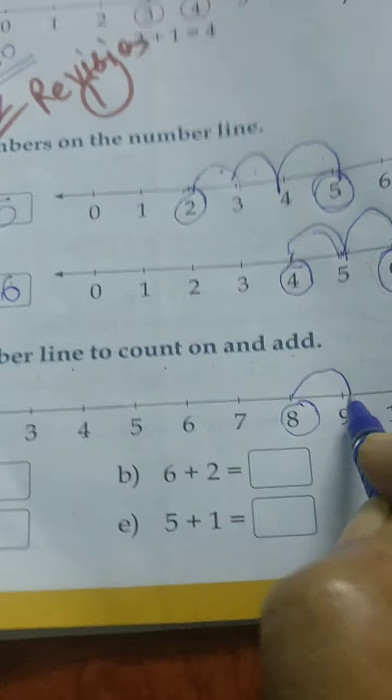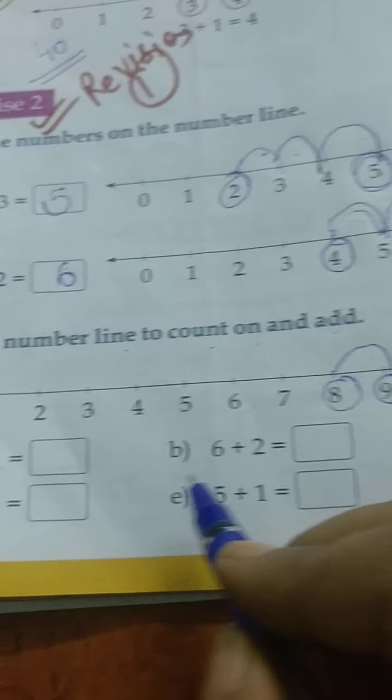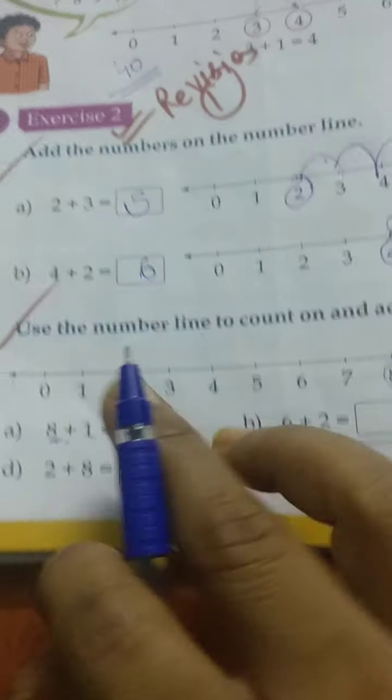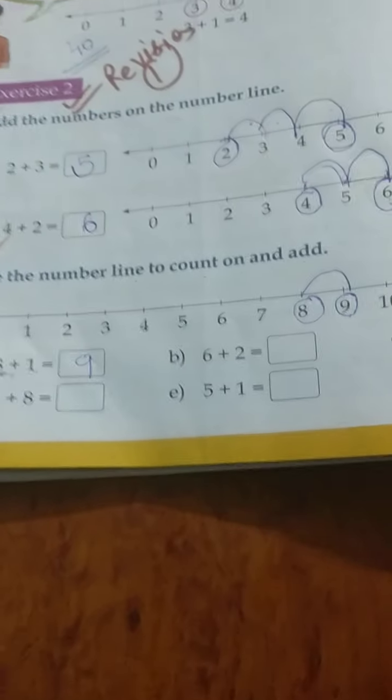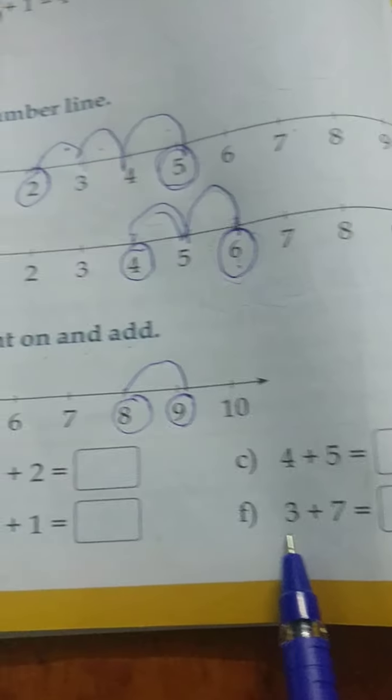So you have to jump only once: 1. We jumped once, and where did we stop? On 9. Good. So you have to write 9. Like this, using the number line, you have to do all the questions in your notebook.